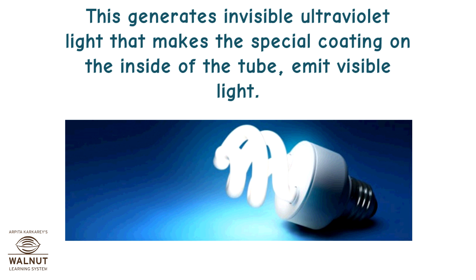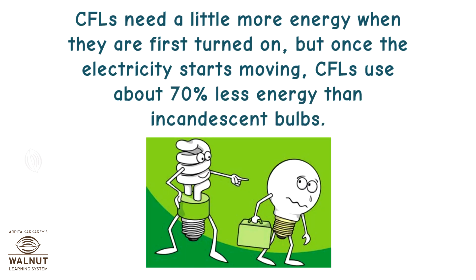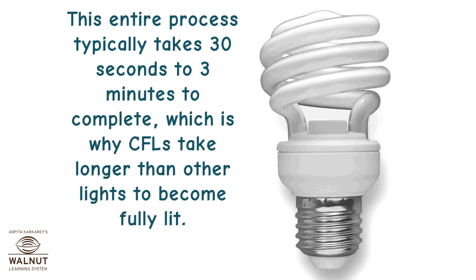This generates invisible ultraviolet light that makes the special coating on the inside of the tube emit visible light. CFLs need a little more energy when they are first turned on, but once the electricity starts moving, CFLs use about 70% less energy than incandescent bulbs. This entire process typically takes 30 seconds to 3 minutes to complete, which is why CFLs take longer than other lights to become fully lit.